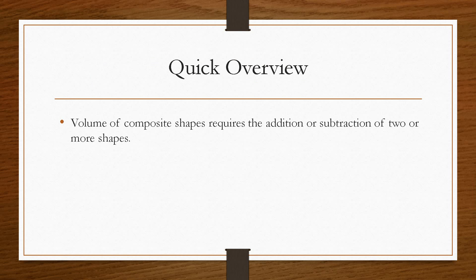But here in the exam, in the more difficult questions, we can have the volume of composite shapes. Now a composite shape is basically one shape that we can divide up into easier, manageable shapes, either by adding or subtracting two or more shapes.